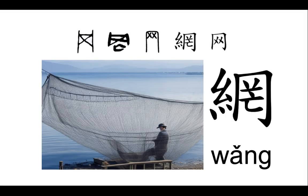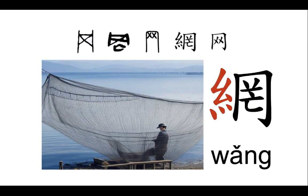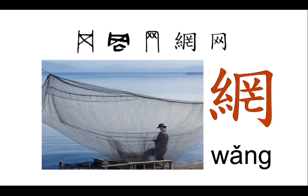As Chinese characters got fancier, they added Mì (thread) to Wǎng to show that nets are woven with threads. So when you write Wǎng, you start with Mì for the woven threads, then draw the net frame and lines, and finish with Wǎng for the sound. This will help you remember how Wǎng is structured and written.